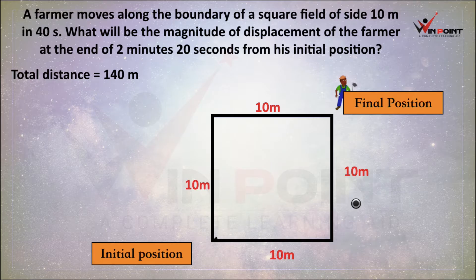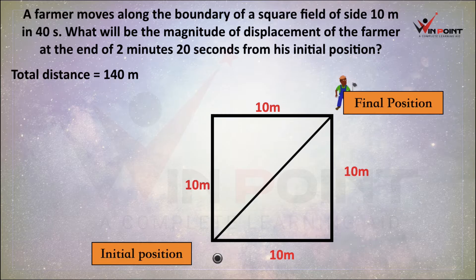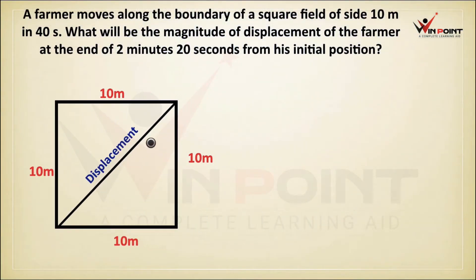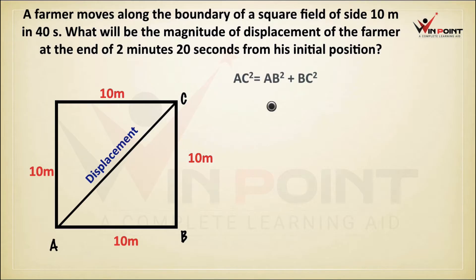How can we find displacement? Displacement is the straight-line distance between the initial and final position. We are considering the right triangle formed and labelling its vertices A, B, and C. We need to find AC, so we apply the Pythagorean theorem: AC squared equals AB squared plus BC squared.